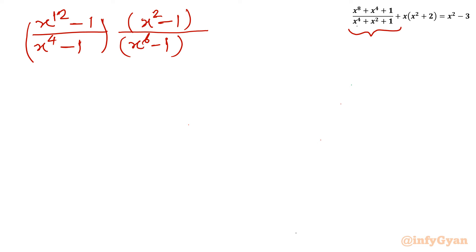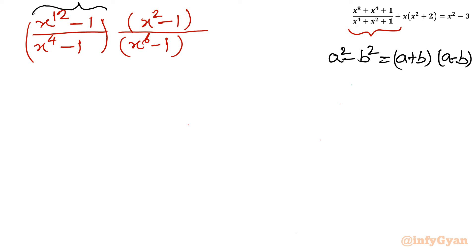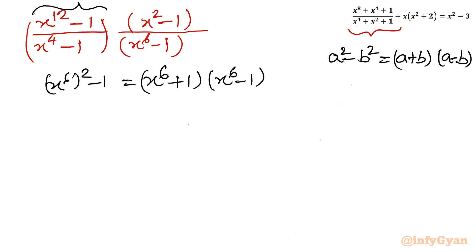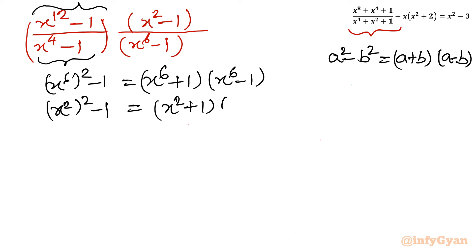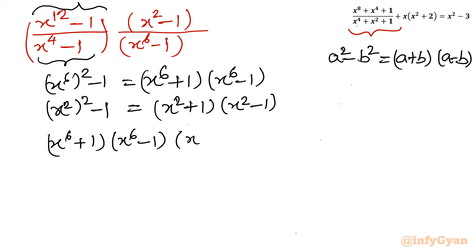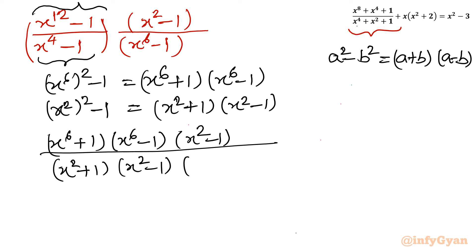Now I will use the difference of two squares identity: a² - b² = (a + b)(a - b). I will write x¹² - 1 as (x⁶)² - 1, giving (x⁶ + 1)(x⁶ - 1). Similarly, x⁴ - 1 = (x²)² - 1 = (x² + 1)(x² - 1). Putting both values in: the expression becomes (x⁶ + 1)(x⁶ - 1)(x² - 1) divided by (x² + 1)(x² - 1)(x⁶ - 1).